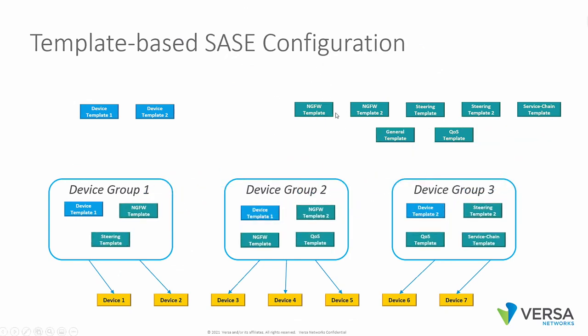For example, you can have a next generation firewall policy which can be applied to the device group that works for your data center branches. This same template can be applied to your device group working for the branch offices, and the same can be applied to your SASE gateways serving your remote users connecting from their home offices or roaming in the field.